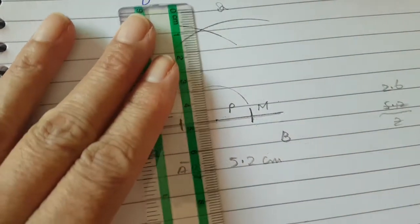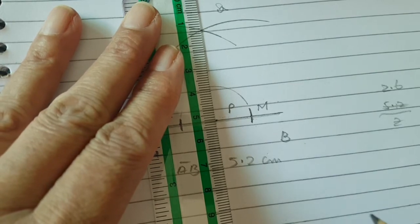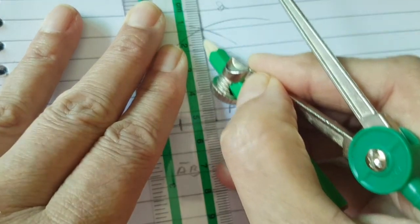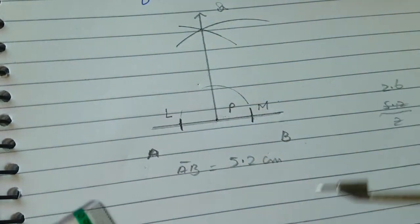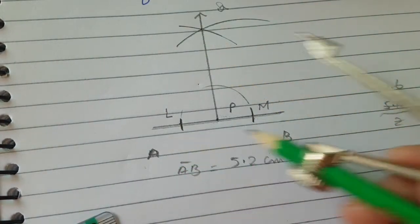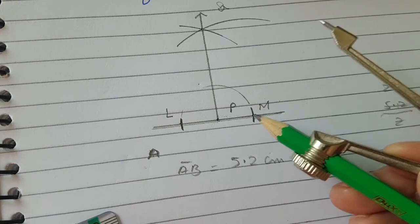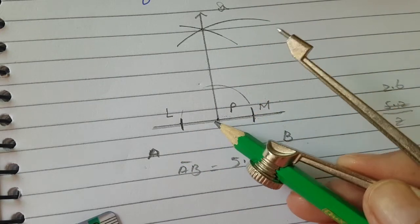At Q you will extend this line to the midpoint P and you will get the perpendicular bisector of this line, which cuts the line AB at the midpoint in equal halves.